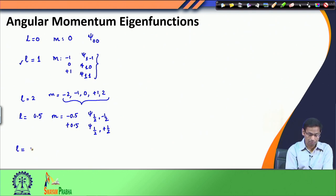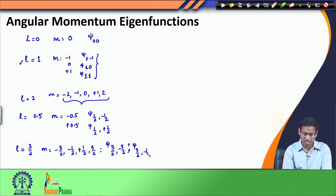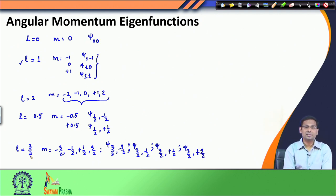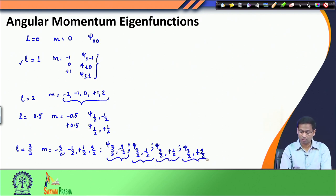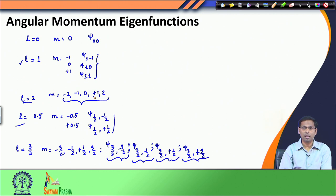Similarly, if L is 3/2, my M values will be minus 3/2, minus 1/2, plus 1/2, and plus 3/2, giving four wave functions: psi_(3/2)_(minus 3/2), psi_(3/2)_(minus 1/2), psi_(3/2)_(plus 1/2), and psi_(3/2)_(plus 3/2). So when L is 3/2 I have four angular momentum eigenfunctions — we are getting 2L+1. When L is 1/2, 2L+1 is 2; when L is 1, it is 3; when L is 2, it is 5.